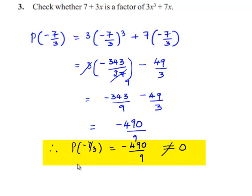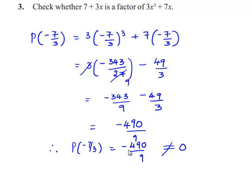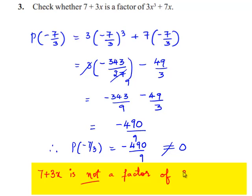Therefore, p(−7/3) = −490/9, which is not equal to 0. In the beginning, it was said that 7 plus 3x is a factor of 3x³ plus 7x if and only if the remainder is 0. But here we got the remainder equal to −490/9. So, we can say that 7 plus 3x is not a factor of the given polynomial 3x³ plus 7x.